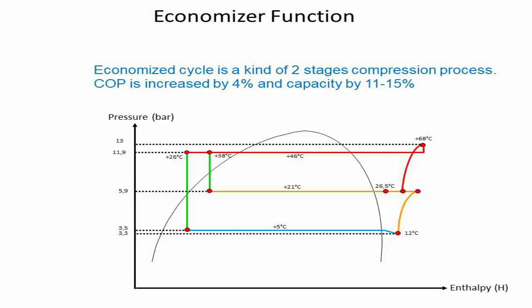By using an economizer, a chiller coefficient of performance can be increased by a total of 4%, and capacity by 11-15%.